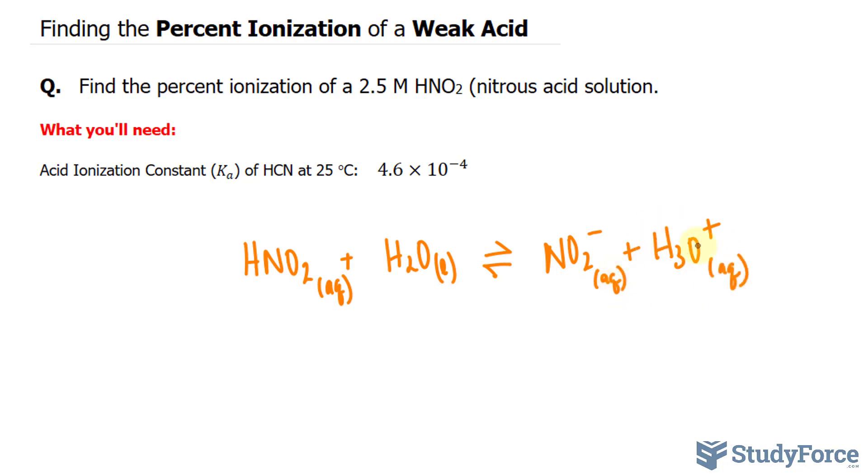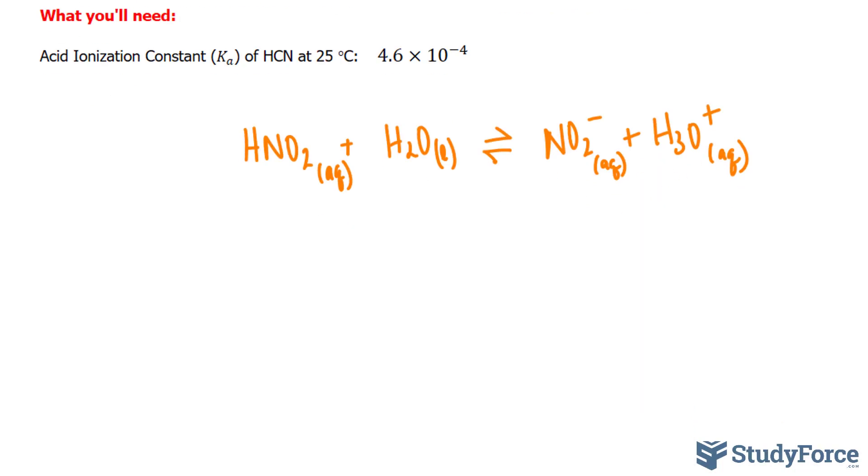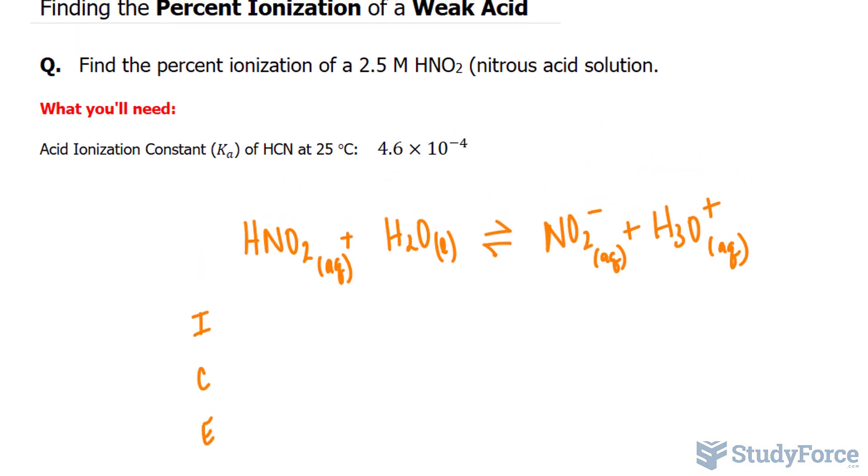Now we need to find the concentration of H3O+. I'll create a table where I have I, C, E. I represents initial, change, and equilibrium concentrations. We've been told the initial concentration of the weak acid. It is 2.5 molar. We don't need to worry about H2O because that's not part of the equilibrium expression anyway, since it's a liquid.